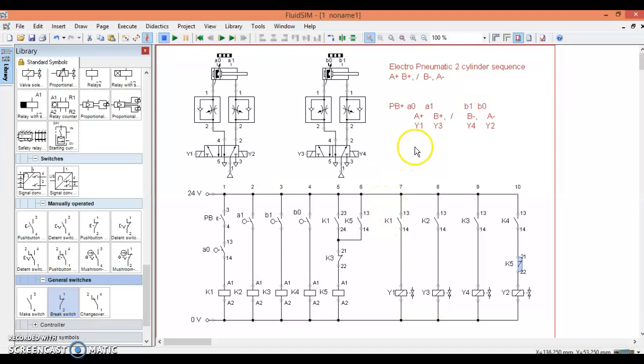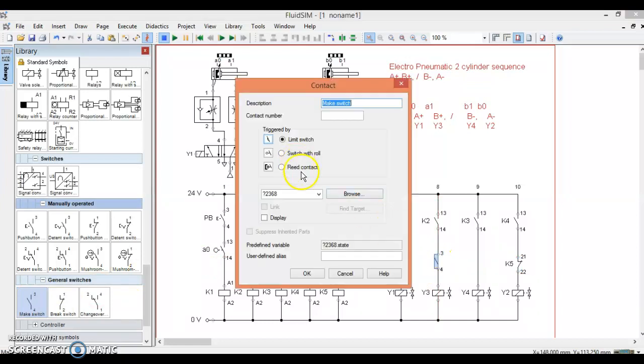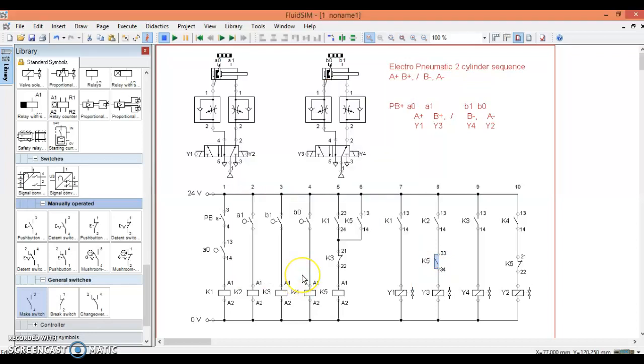We then also have an issue here, where we want Y3 to be able to activate, but Y4 will already be active in the middle part. So what we do is we drop in a normally open element from K5 here. So now we've interrupted the elements that we need to interrupt.